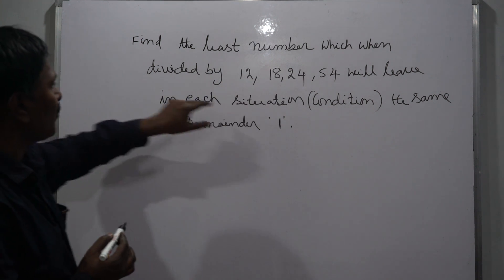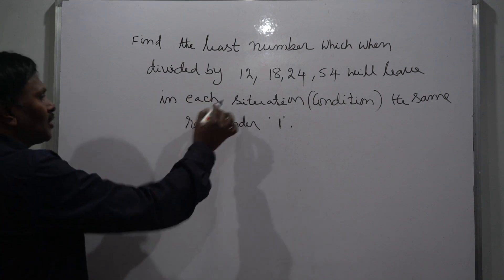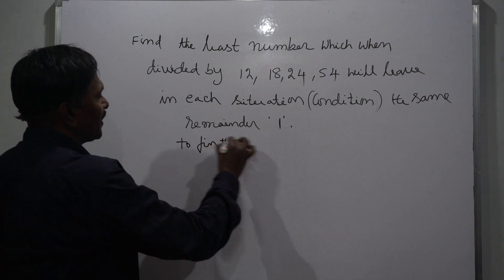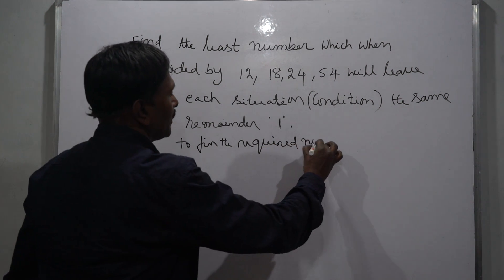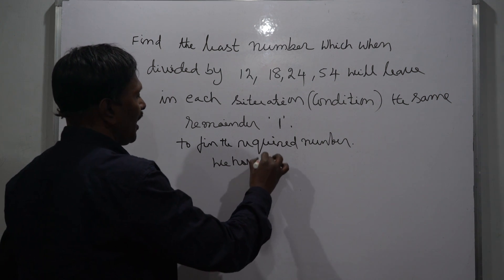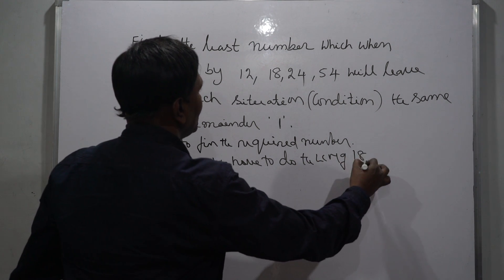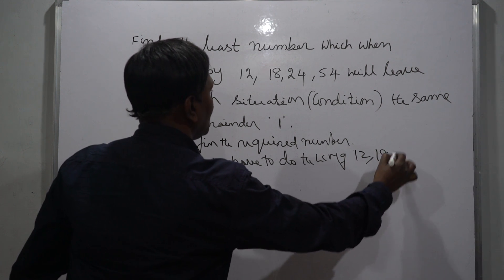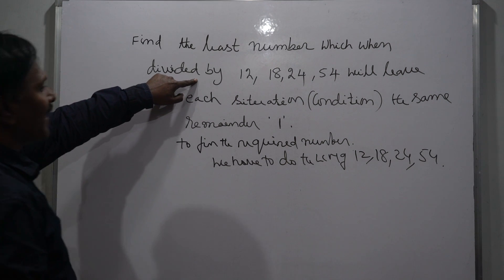To find the required number, we have to do the LCM of 12, 18, 24, 54. If you observe the problem carefully, the required number always must be greater than the LCM of these numbers.